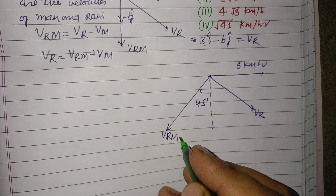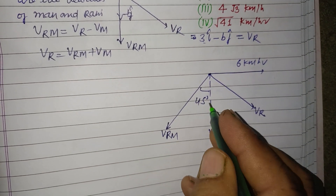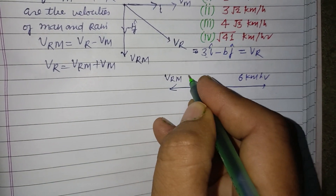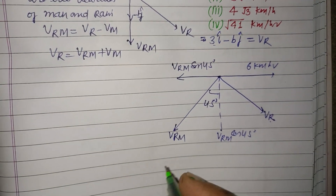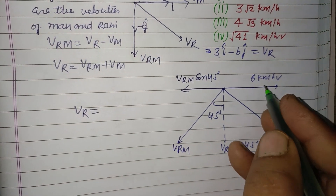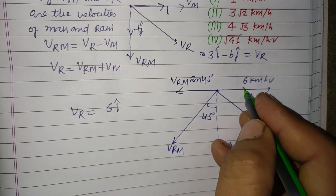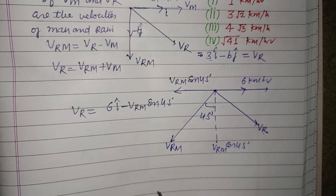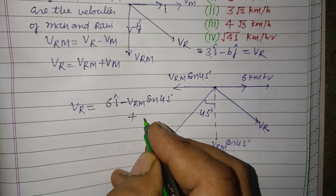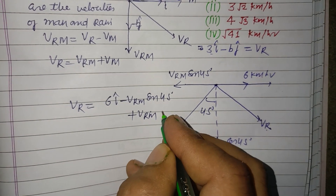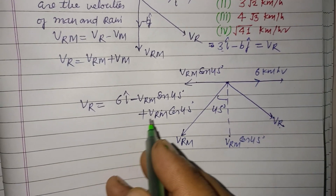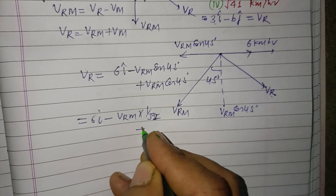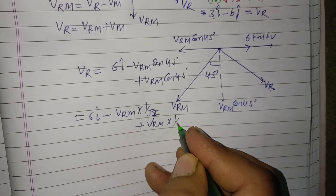Now we resolve V_RM into components: V_RM cos 45 in the vertical direction and V_RM sin 45 in the horizontal direction. The V_R vector is 6i-cap minus V_RM sin 45 plus V_RM cos 45. Since sin 45 and cos 45 are the same, equal to 1 over root 2, the V_RM sin 45 terms cancel out.